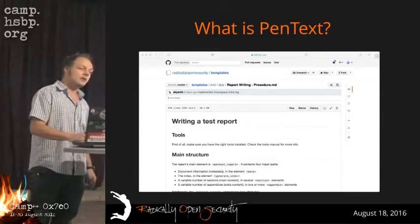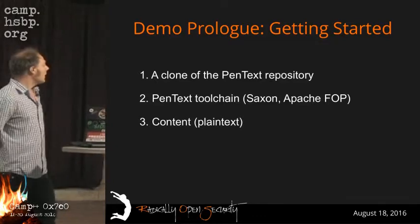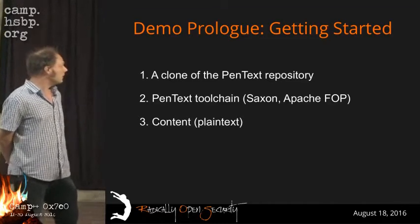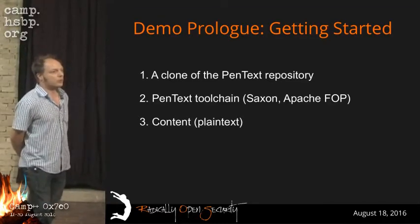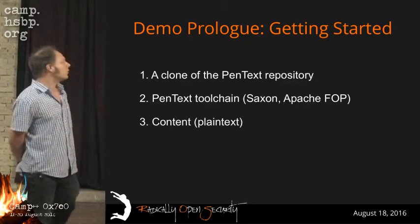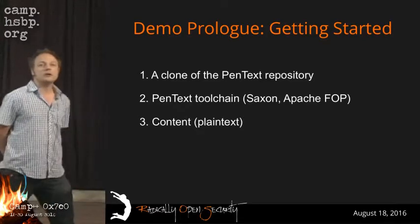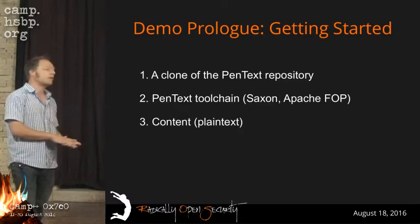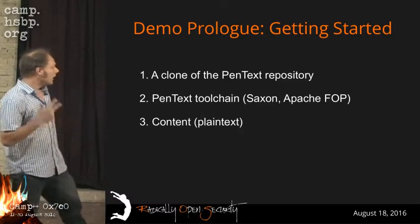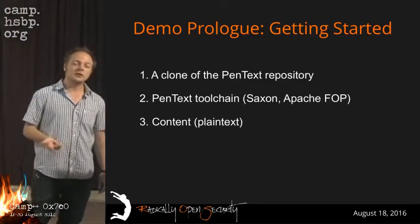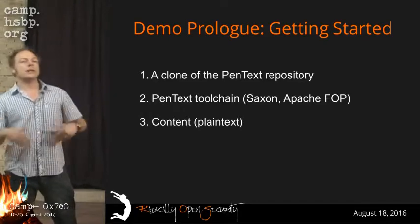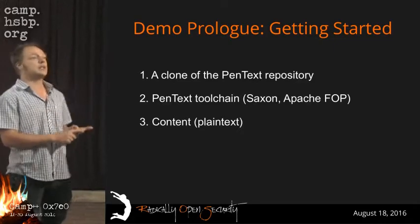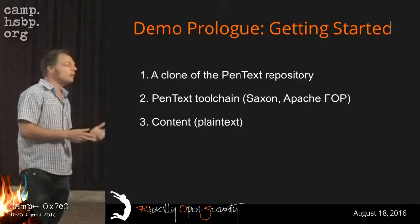quotes, and most importantly, pentest reports. How to get started: say you're a pentester and you want to make a beautiful pentest report. First, you need a clone of the Pentext repository — that's up on GitHub, you clone it to your local machine. Second, you need the Pentext toolchain — the tools which under the hood convert all the text and XML files into the resulting PDF files. Third, you need the content. Those three things are the only things you need to start building your own beautifully looking PDF reports.